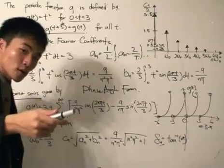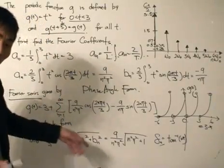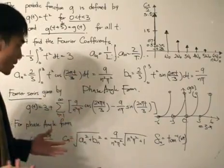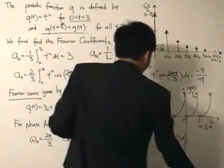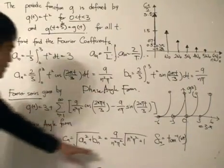We want to move into the phase angle form of the Fourier series. We need to calculate these values. cₙ is given by √(aₙ² + bₙ²), which I've done over here. The phase angles are given by arctan(-bₙ/aₙ).